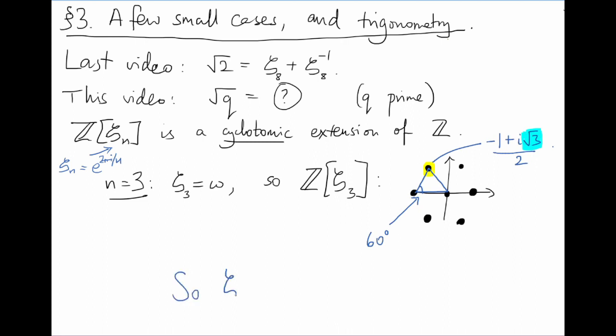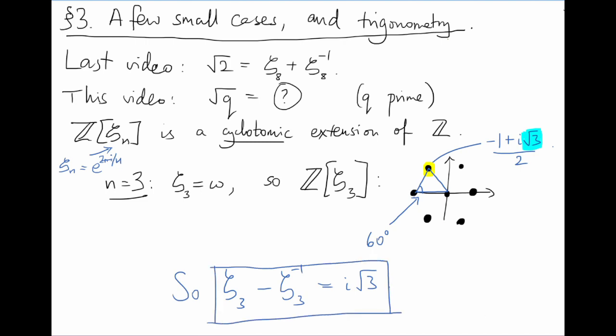This time, zeta minus zeta inverse equals i times root 3. We could divide by the i if we wanted to, but for now let's just leave this as it is and move on.